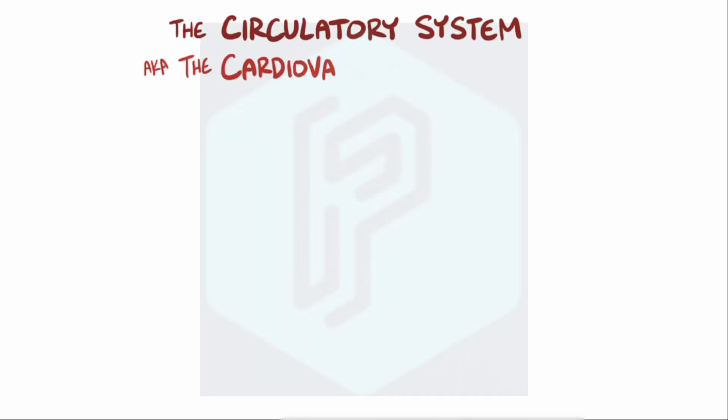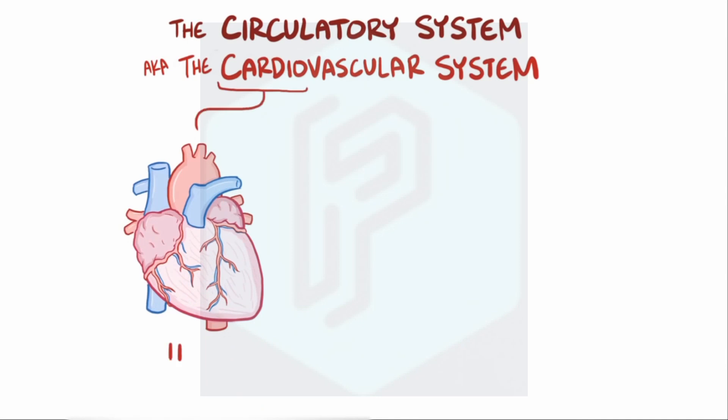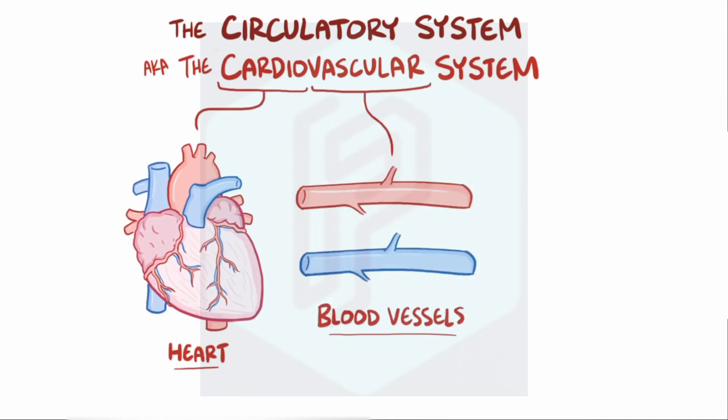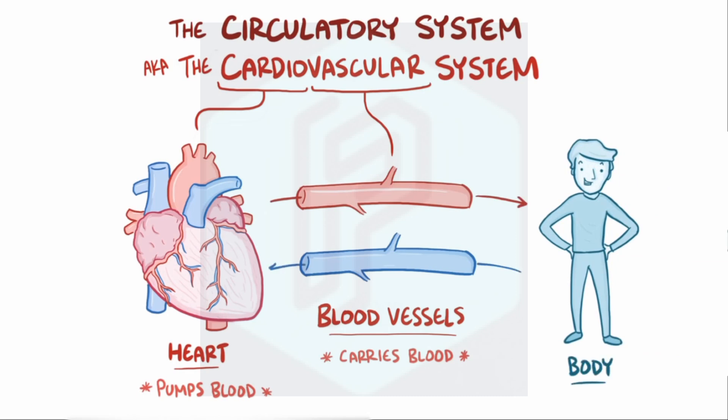The circulatory system is also called the cardiovascular system, where cardio refers to the heart and vascular refers to the blood vessels. So these are two key parts: the heart which pumps blood, and the blood vessels which carry blood to the body and return it back to the heart again.